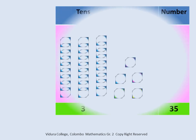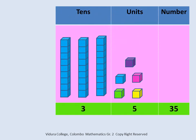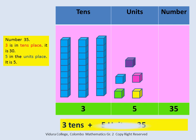We will go to the next chart. Look at the chart. There are three rods in tens place, five blocks in units place. Three is in tens place. It is thirty. Five in the units place. It is five. Three tens and five units make thirty-five.